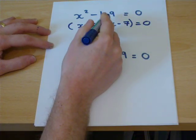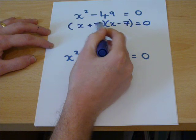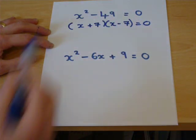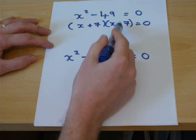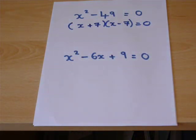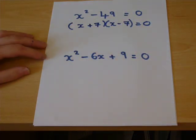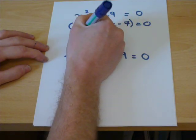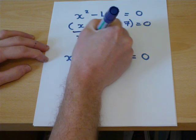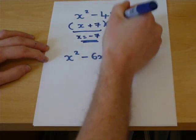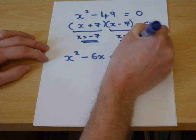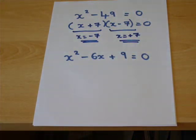This is a square number. 7 times minus 7 is minus 49. And there are no x terms because 7 take away 7 is 0. The x terms cancel out. And to make this equal to 0, x must be minus 7. But to make that equal to 0, x could equal plus 7. And they are the two possible solutions to that equation.